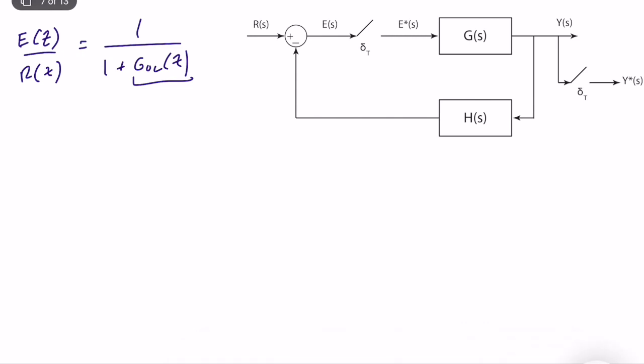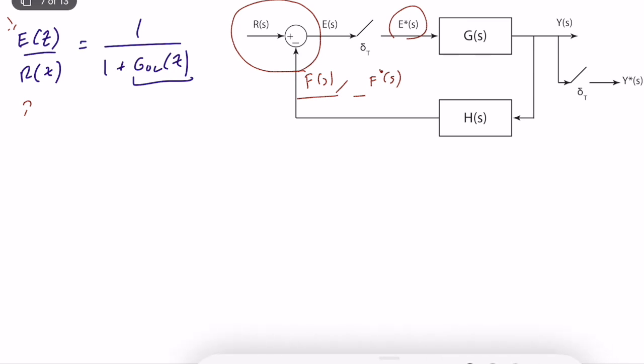So what is G_OL(z)? One way of computing that is simply computing the transfer function from R to E(z). It will be in this form, because of this difference operation, and the part in the numerator in the 1-plus part is technically the open-loop transfer function. The other way of solving is: this is F(s), which is the signal that goes into the feedback terminal. We sample it to obtain F*(s) or F(z), and we find the transfer function from E*(s) to F*(s), convert it to the Z domain — it will be the Z-domain open-loop transfer function.